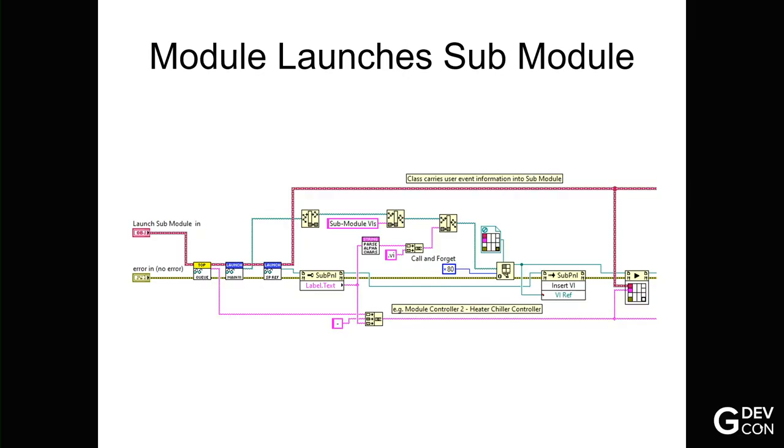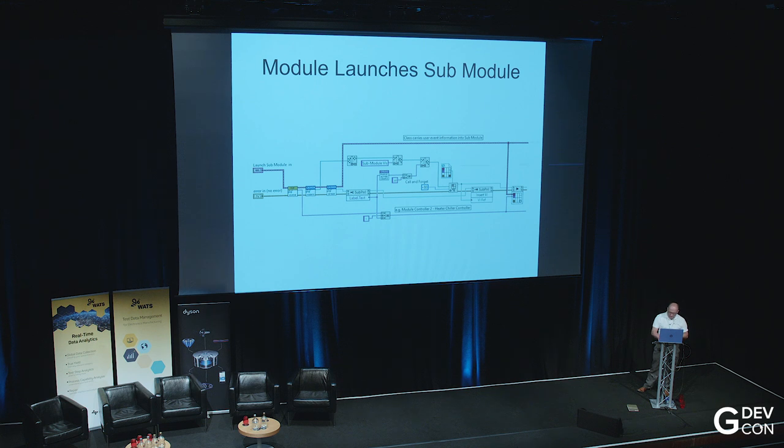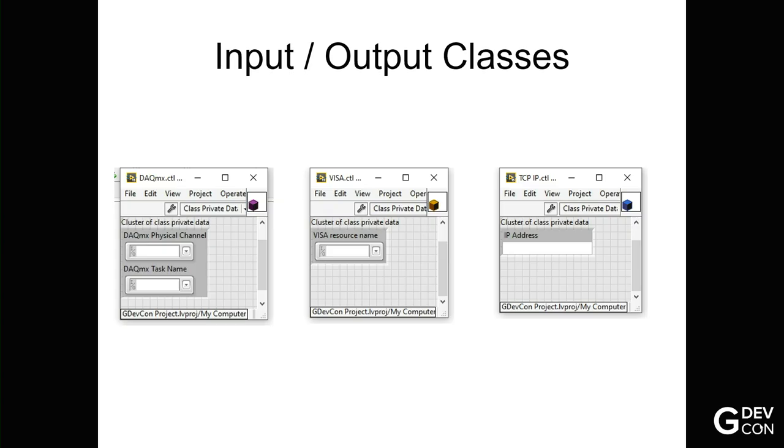And the module then launches a submodule. So these are the tier two VIs. Again, very similar thing. But this time what we're doing is we're taking the queue name that's calling it, so it might be module one, putting a hyphen in there, and then saying, well, we're launching the heater chiller, for example, heater chiller controller. So you'll end up with a queue name that is module controller two, heater chiller controller. So quite long, but at least it's explaining things. And most importantly, you've got a class going in there because it is at this module level that you create your user events, and you need to copy them into the submodules that are called.